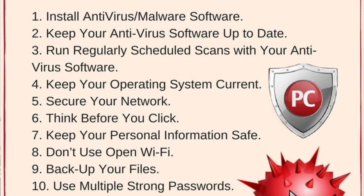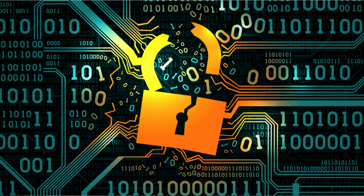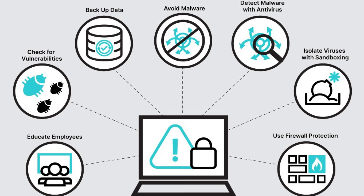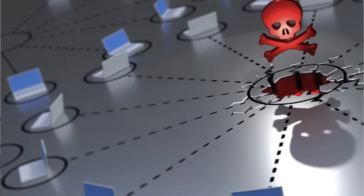Now we go with how we can prevent malware from infiltrating networks. Network security measures such as firewalls, intrusion detection and prevention systems (IDS/IPS) and web filtering can help block malicious traffic and prevent malware from infiltrating networks.